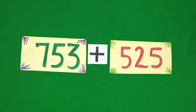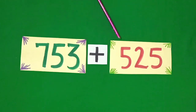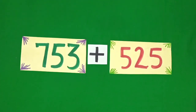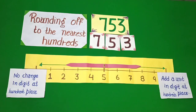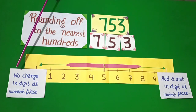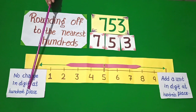Dear students, when we find the estimated answer, we will find it by rounding off the numbers. Rounding off the numbers must be according to the number of digits. Here we have a 3-digit number, so we will round off the 3-digit number to the nearest 100. When we do rounding off to the nearest 100, we look at the digit at the 10th place. If the digit is 4, 3, 2, or 1 at the 10th place, there is no change in the digit at the 100th place.